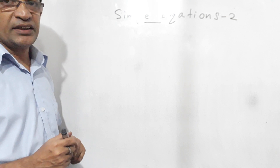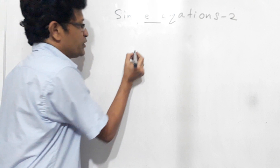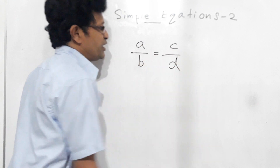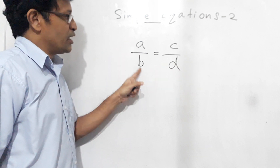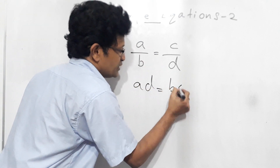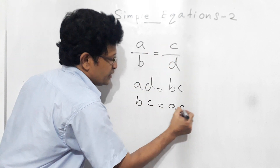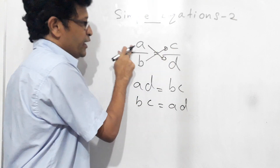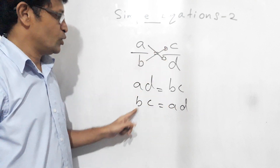When you study simple equations, it is very important to understand cross multiplication. That means if you have a over b equals c over d, then you can write a into d — that is ad — equals b into c — that is bc. So ad equals bc, or bc equals ad. This is called cross multiplication.